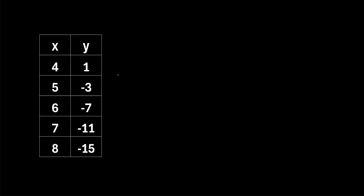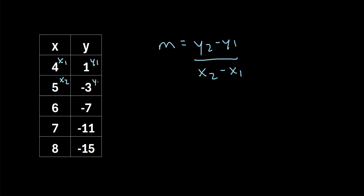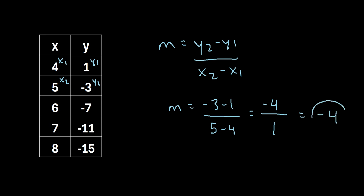Let's try another example. We're given this table of values and we want to calculate the slope using the same formula: y2 minus y1 over x2 minus x1. Let's pick the first row as x1, y1, and the second row as x2, y2. Plugging in: slope equals y2 minus y1, so negative 3 minus 1, divided by x2 minus x1, so 5 minus 4. That gives us negative 4 over 1, or simply negative 4. So the slope of the line represented by these values is negative 4.